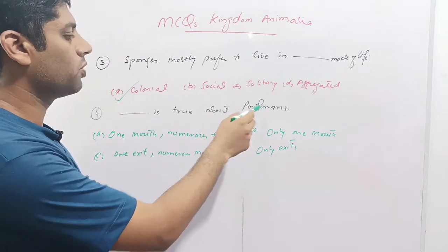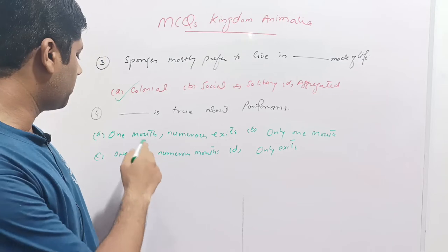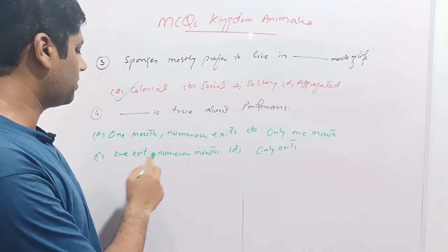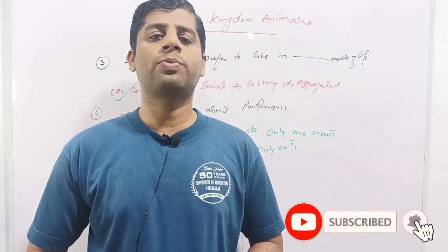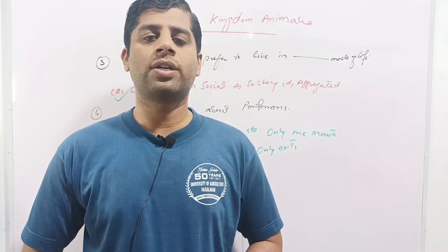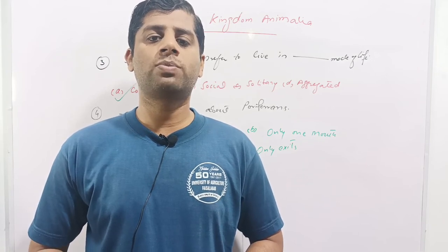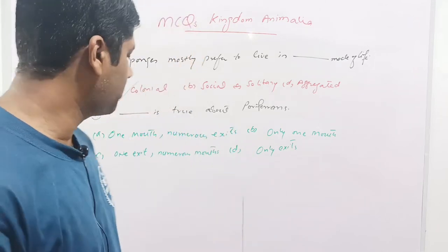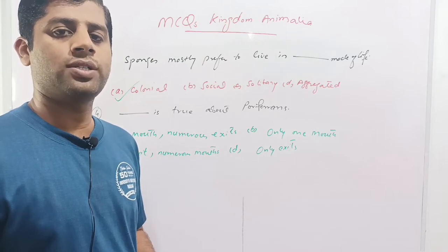Next is: what is true about the Poriferans? Poriferans means members of Phylum Porifera. Given options are: one mouth and numerous exits; only one mouth and one exit; numerous mouths and one exit; or only exits. Sponges bear numerous pores called ostia, and one opening called the osculum from which water and waste exit. So option C is correct: sponges have one exit called osculum and numerous mouths called ostia.